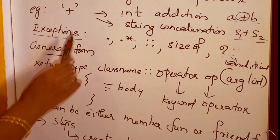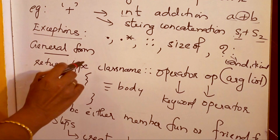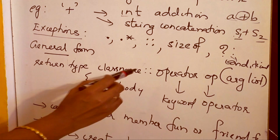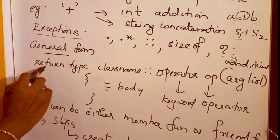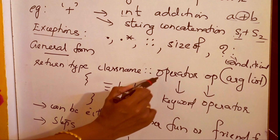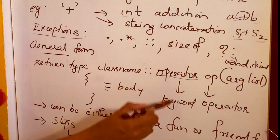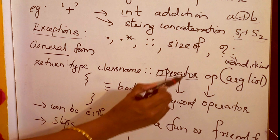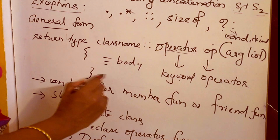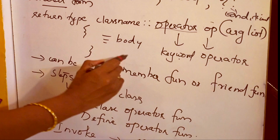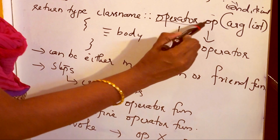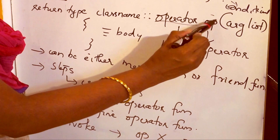In order to implement operator overloading, our class should have a member function or a friend function of the general form: return type, followed by class name, followed by scope resolution operator, followed by the keyword operator. This keyword indicates that the following operator symbol is going to be overloaded, as defined in the body of the function.